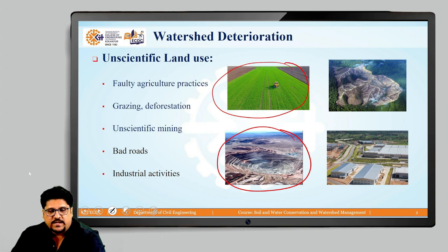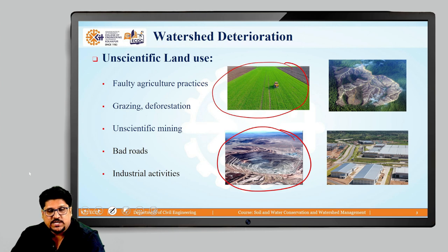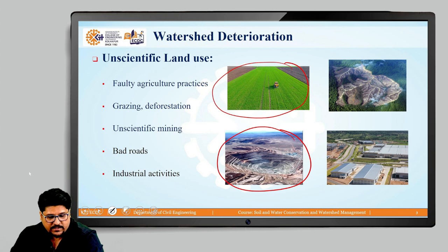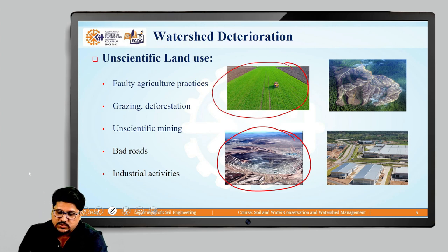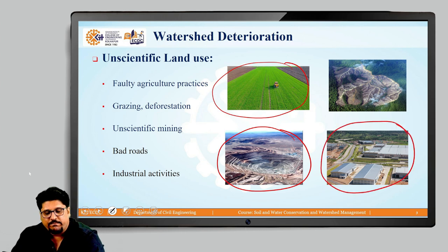Other activities like construction — road alignments and various construction activities which are not done in a scientific way — can also lead to watershed-related problems. The next point is about industrial activities. Whatever industrial activities are part of the watershed, if they are developed in an unplanned way, that will also lead to deterioration of the watershed. This picture shows the development of an industrial area within a particular watershed.